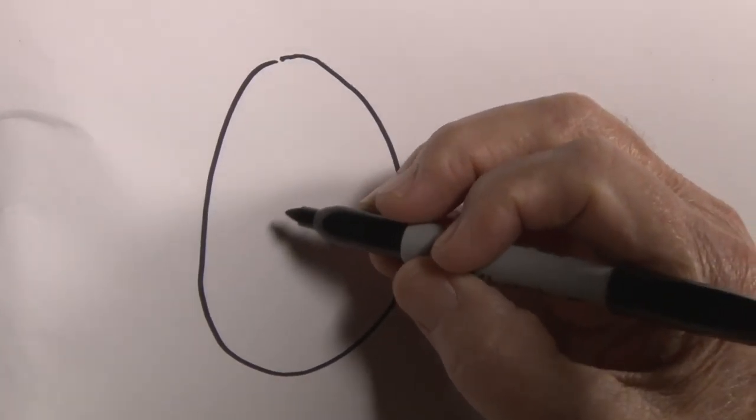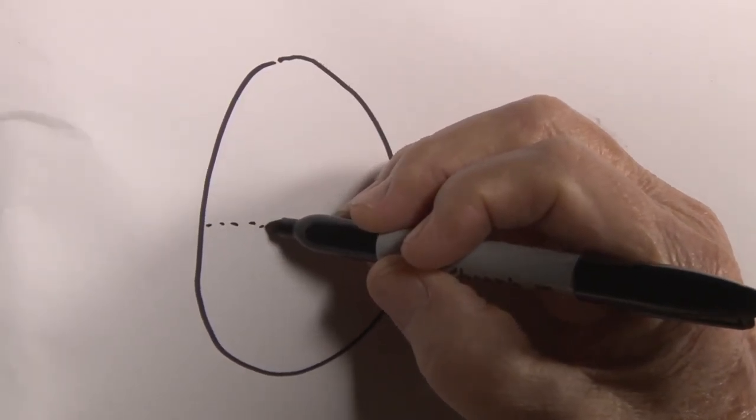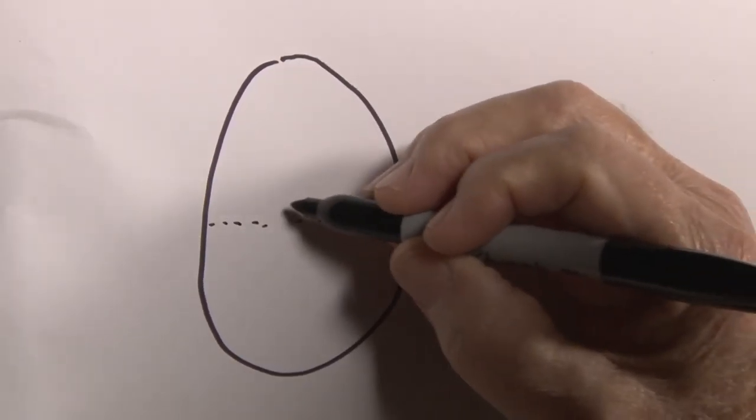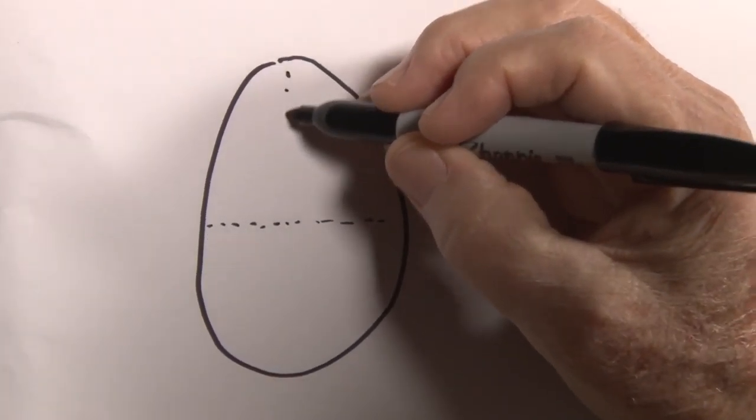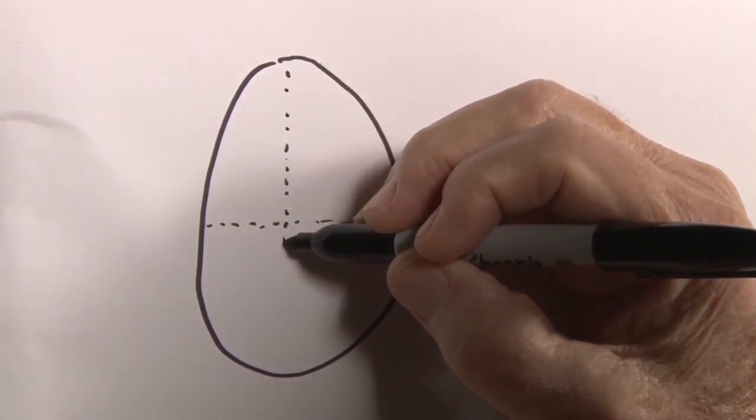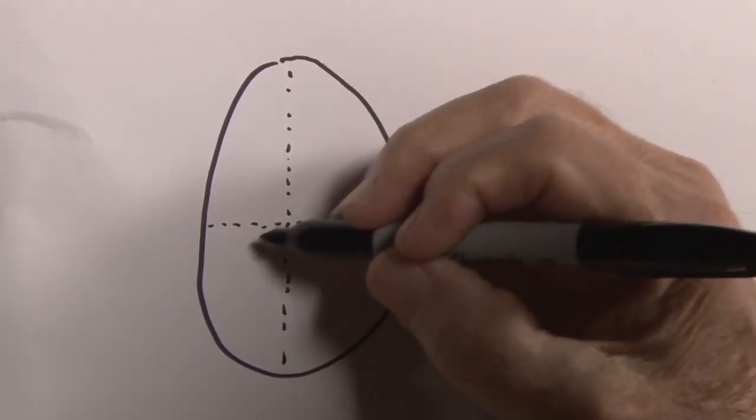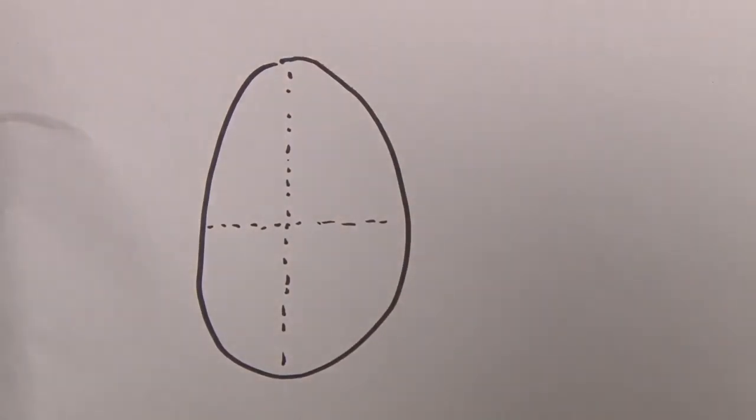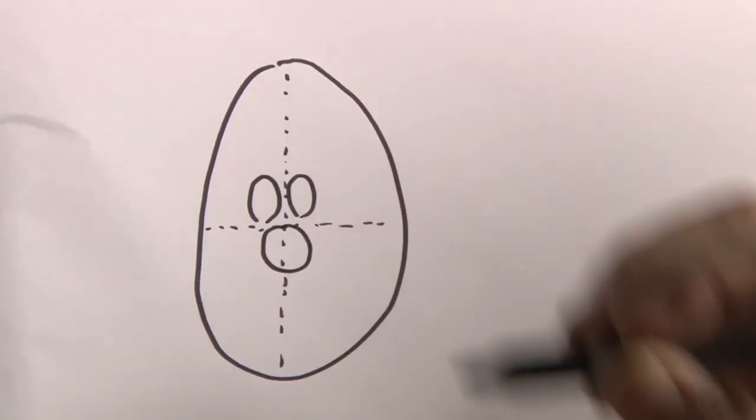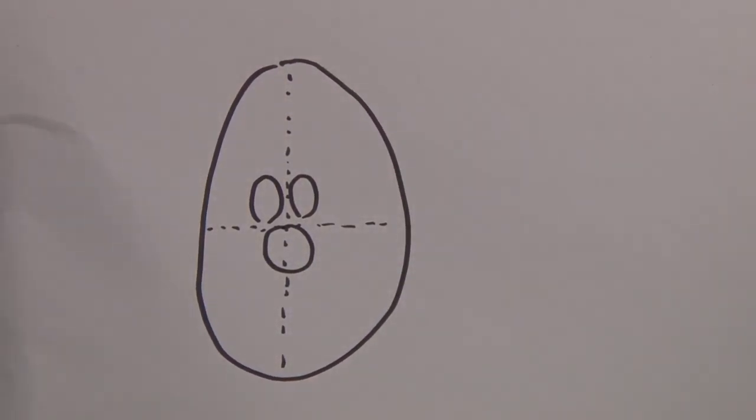Those of you who remember seeing some of those early programs recall that I demonstrated how you could draw a circle or a roundish figure and then do some criss-cross lines.